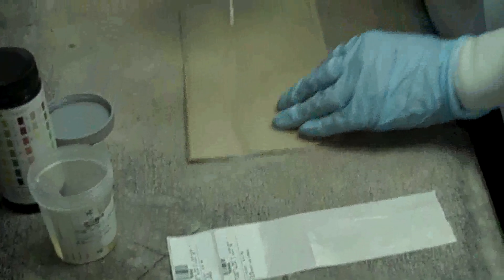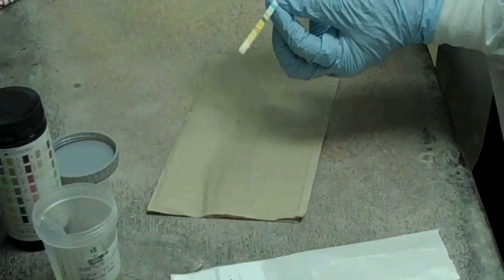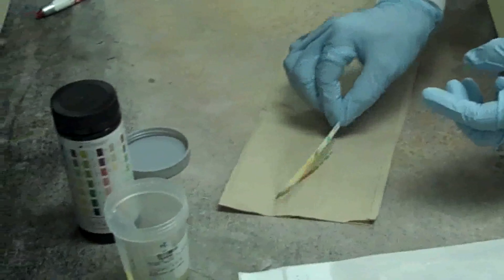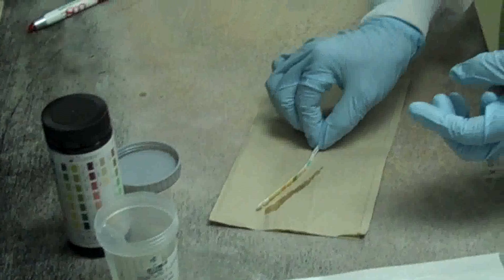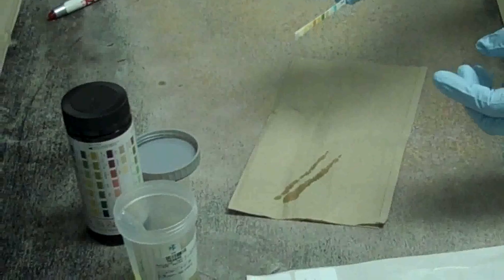Immediately set timer, start timer, and blot the test pad edge of the strip to the paper towel to remove excess urine.